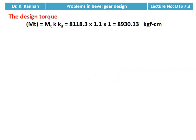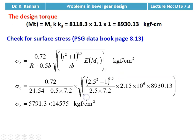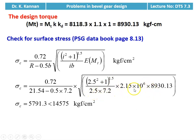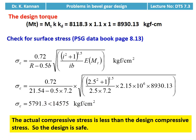Then we calculate the design torque for checking: MT = nominal twisting moment × k × kd = 8118.3 × 1.1 × 1 = 8930.13 kgf·cm. Check for surface stress using the equation on page 8.13: sigma_C = 0.72 / (R − 0.5b) × √[(i² + 1)^1.5 / (i × b × E × MT)]. Substituting all values, sigma_C = 5791.3 kgf/cm², which is less than the design compressive stress of 14575 kgf/cm². The actual compressive stress is less than the design compressive stress, so the design is safe.